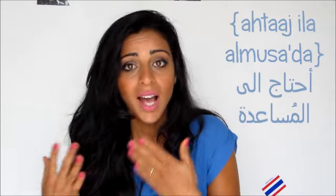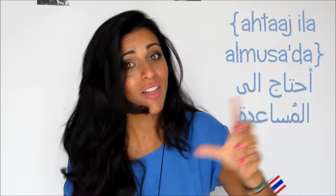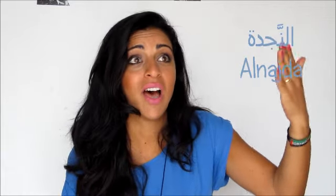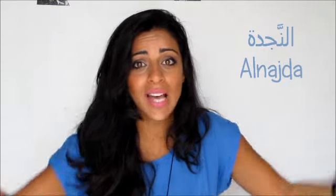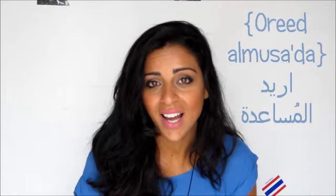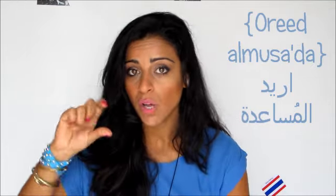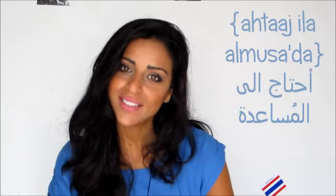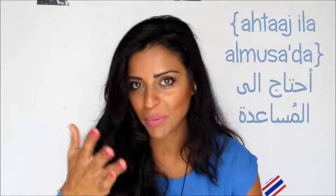So to summarize: saaduni is for urgent situations. Ahtaj ila al-musaada is for when it's not extreme or urgent — like asking me, Maha, for help with the Arabic language. For those cases you say ahtaj ila al-musaada fi al-lugha al-arabiyya — I need help in the Arabic language. Note that ureid al-musaada can also imply you want to give help, not just receive it. So ahtaj ila al-musaada is more precise — it makes clear that you are the one in need of help.